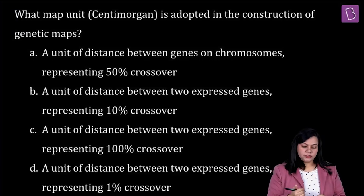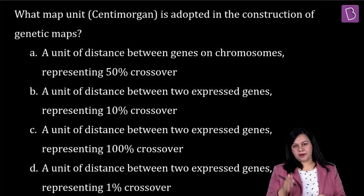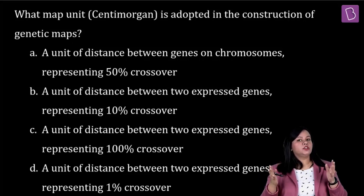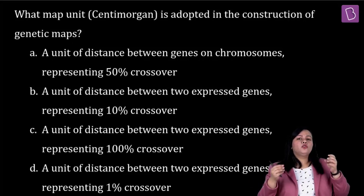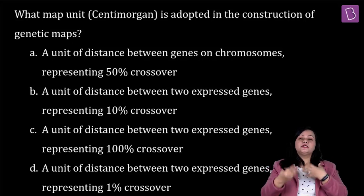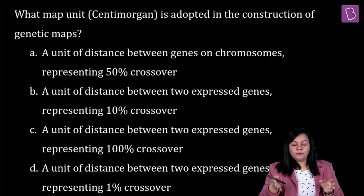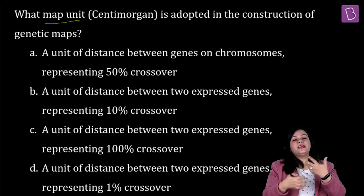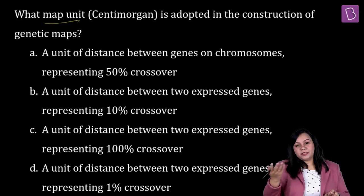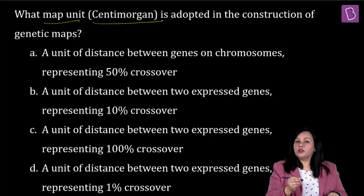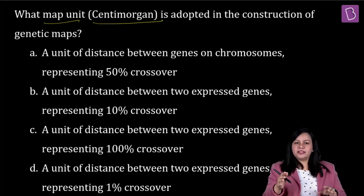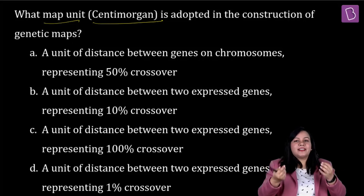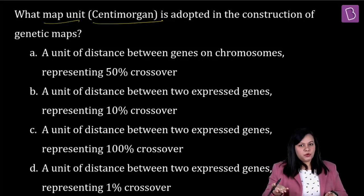What map unit or centimorgan is adopted in the construction of genetic maps? The purpose of creating genetic maps is to find out how exactly genes are located on the chromosome — their position, how much linkage they show, and how closely or far apart they are. The unit used is called the map unit, or centimorgan, named in respect of Thomas Hunt Morgan who spoke extensively about linkage. This can also be represented in terms of crossing over frequency or recombination frequency.